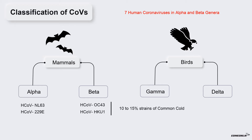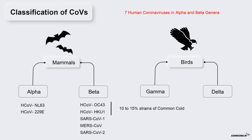The remaining three strains of human coronaviruses are SARS-CoV-1, MERS-CoV, and SARS-CoV-2. These viruses have emerged into the human population over the last two decades through zoonotic transfer, or species jumping. All these zoonotic viruses belong to beta coronaviruses.